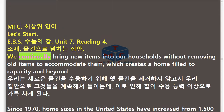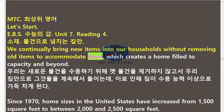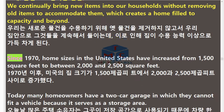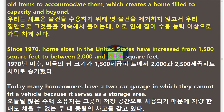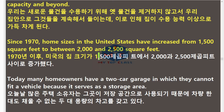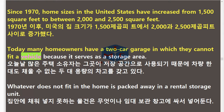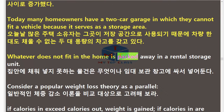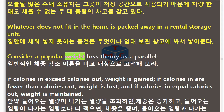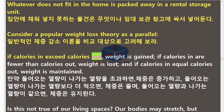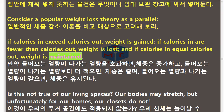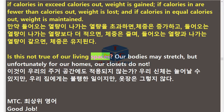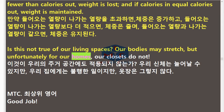We continually bring new items into our households without removing old items to accommodate them, which creates a home filled to capacity and beyond. Since 1970, home sizes in the United States have increased from 1,500 square feet to between 2,000 and 2,500 square feet. Today many homeowners have a two-car garage in which they cannot fit a vehicle because it serves as a storage area. Whatever does not fit in the home is packed away in a rental storage unit. Consider a popular weight loss theory as a parallel: if calories in exceed calories out, weight is gained; if calories in are fewer than calories out, weight is lost; and if calories in equal calories out, weight is maintained. Is this not true of our living spaces? Our bodies may stretch, but unfortunately for our homes, our closets do not.